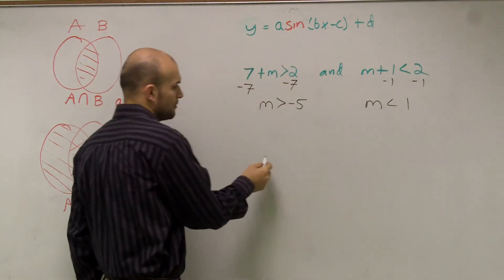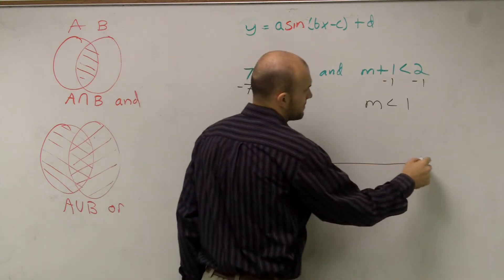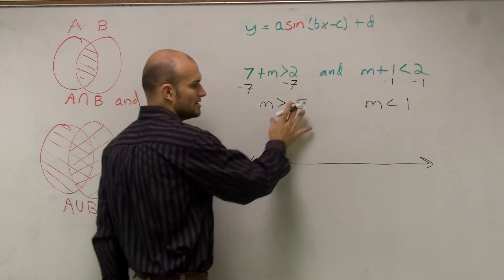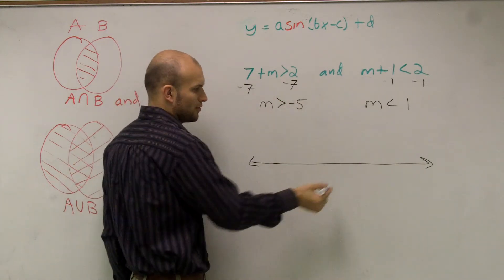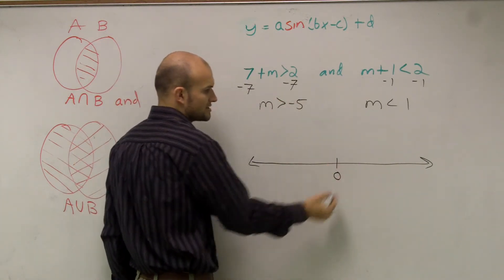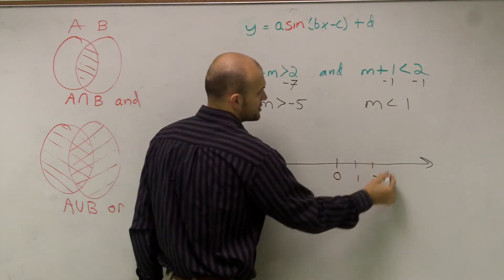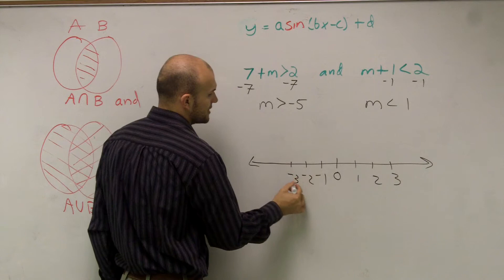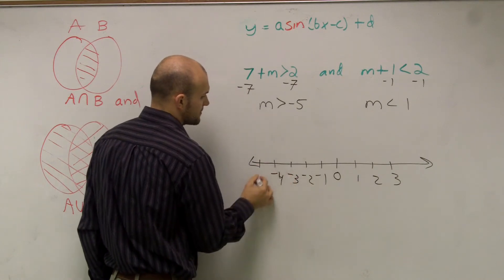Well, we can do this a couple ways. One way we can do this is, first of all, I need to have a number line that's going to support both of these inequalities. So I go to 0, let's say that's 1, 2, 3, that's negative 1, negative 2, negative 3, negative 4, negative 5.